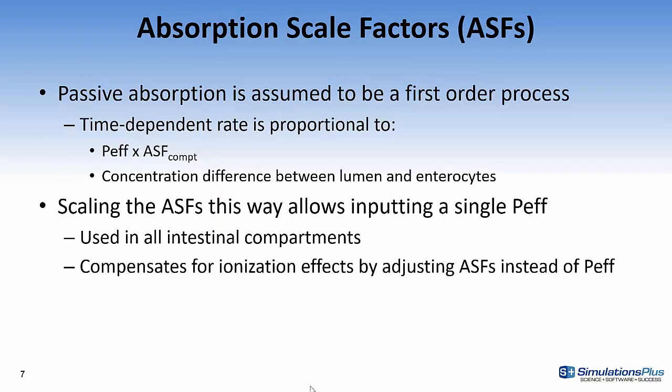Absorption scale factors are used to change the absorption in the different compartments of the GI tract without inputting different Peff values. Passive absorption is assumed to be a first order process. It's time dependent and it's proportional to the permeability times the absorption scale factor. It's also related to the concentration difference between the lumen and the enterocytes. Scaling the absorption scale factors this way allows you to input a single Peff value that's used in all intestinal compartments and it compensates for ionization effects by adjusting the scale factors instead of the Peff.